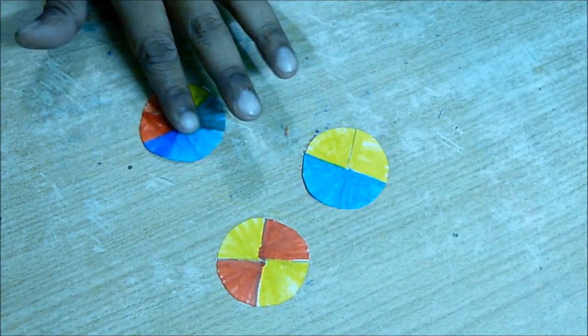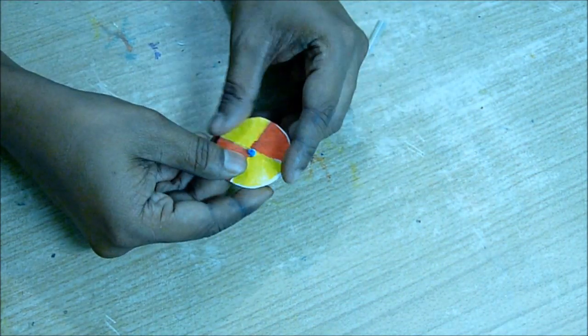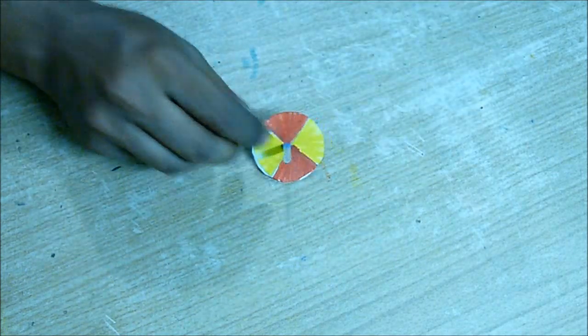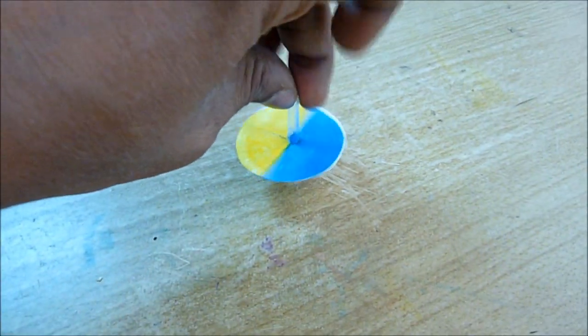I made different color discs like this. Now put one color disc which is red and yellow, and put the top refill part again and rotate it. See the color change to orange.